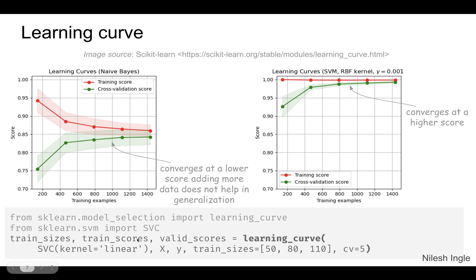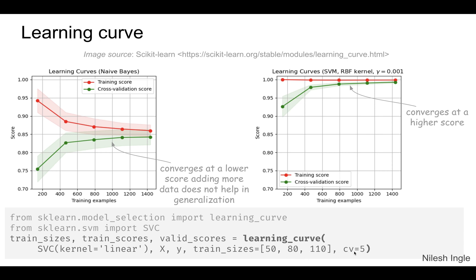The implementation uses train_sizes, train_scores, and validation_scores along with the learning_curve function. We pass in a classifier, the data, the sizes specified, and the number of CV folds.